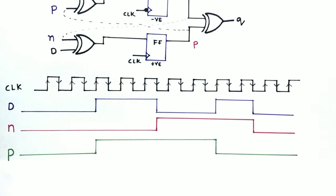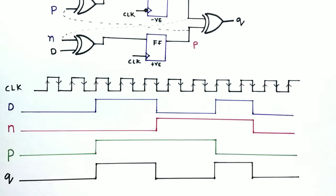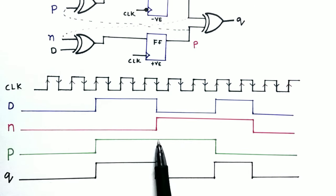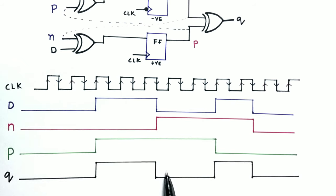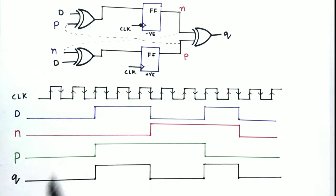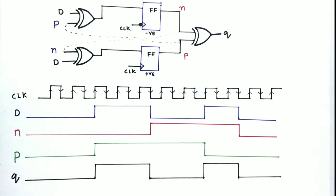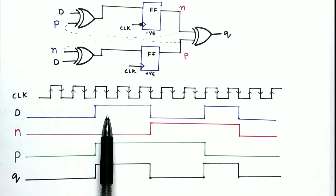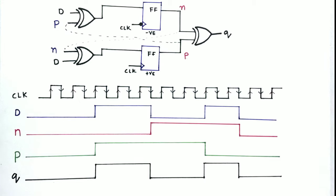We now have the values of P and N. To get the output Q, all we need to do is XOR P and N. When P is high and N is zero, Q is one. When both P and N are high, Q is zero. When P is zero and N is one, Q is high again. As you can see, data is being sampled at both edges — positive and negative — and we get the correct data output.